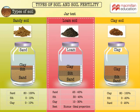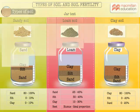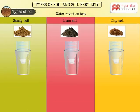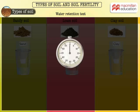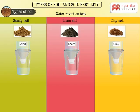Testing water retention capacity of soil is important and useful in deciding the type of crop that it can sustain. Here's a simple experiment for this. We drop equal volumes of sand, loam, and clay into the funnels and label them. We add 100 ml of water into each funnel at the same time and leave the setup undisturbed for 30 minutes. After 30 minutes, we measure the volume of water collected in the three measuring cups.